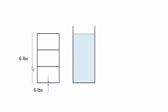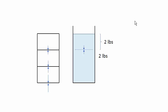Finally, the three blocks together weigh six pounds. They exert a force of six pounds on the table, and the table exerts a counterbalancing force of six pounds back. Now let's look at the water.